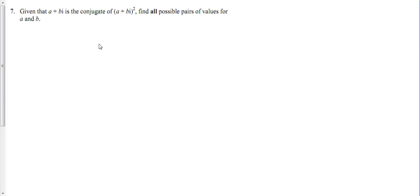Here's question 7 from your homework sheet on complex numbers and equations. In this particular problem, it tells you that a plus bi is the conjugate of a plus bi all squared. Find all possible pairs of values for a and b.